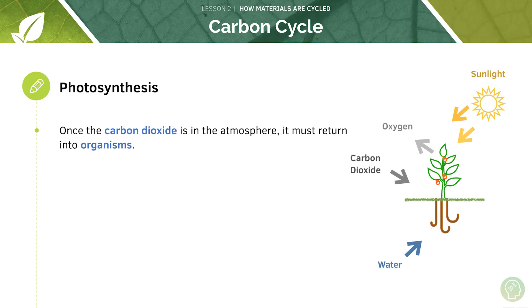Now once the carbon dioxide is in the atmosphere it must return into organisms and this occurs during photosynthesis. Plants take in carbon dioxide and convert the carbon into glucose.